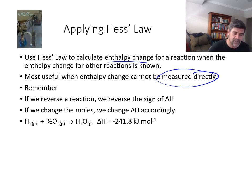There's a couple of important things that we need to remember when we are applying Hess's law in different situations. The first thing is, if we reverse a reaction, that is if we write the reaction in the opposite direction, then we have to reverse the sign of the delta H value. So I've got an equation here which is basically just the formation of water. A combination of hydrogen gas and oxygen gas produces water, and this gives us a delta H value of minus 241.8 kilojoules per mole.